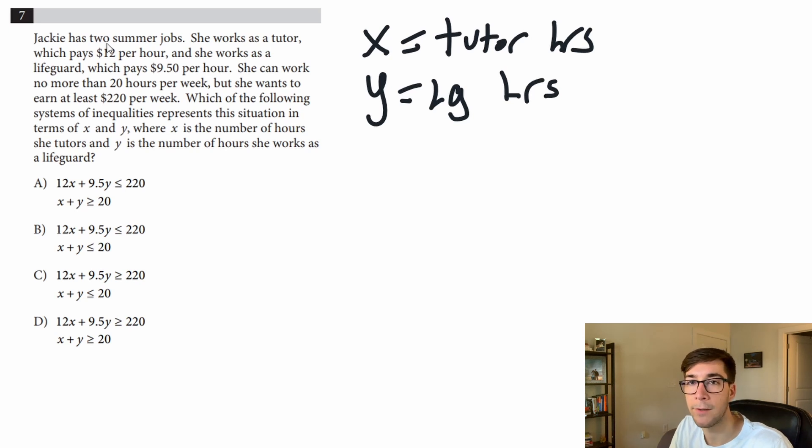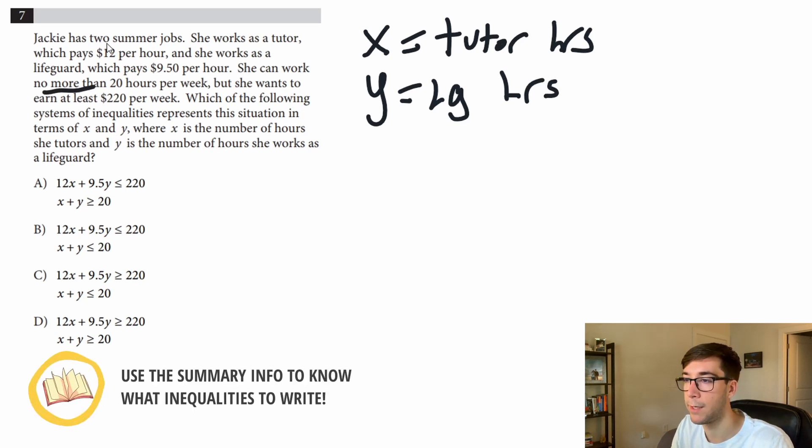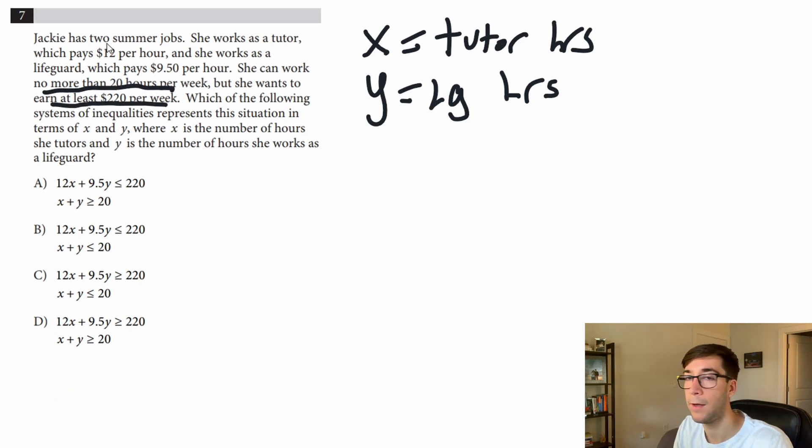It's helpful when you do these to look at the final statement they give you. She can work no more than 20 hours per week is going to be one, but she wants to earn at least $220 per week. We have different things going on. First is no more, so if it says no more, that means it's going to be less than or equal to, because it can be that number but not more than it.